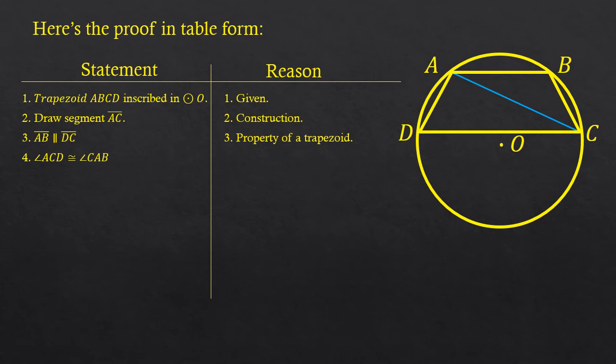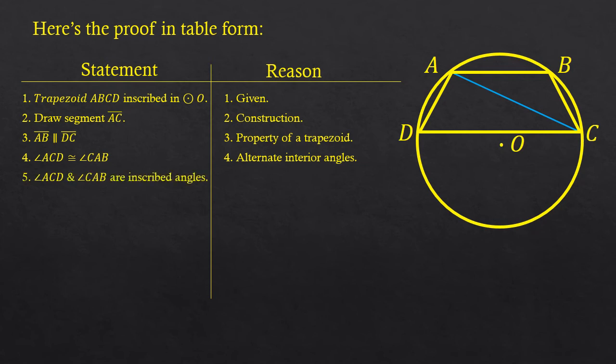The fourth step is that angle ACD is congruent to angle CAB. The reason is that these are alternate interior angles of parallel lines cut by a transversal. Step five is that angle ACD and angle CAB are inscribed angles, and the reason is that their vertices and endpoints lie on the circle.